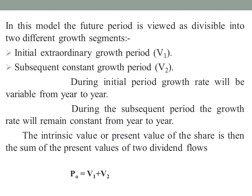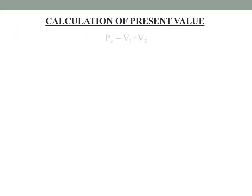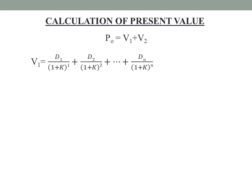Now we will talk about the intrinsic value calculation where P0 equals V1 plus V2. V1 is calculated using the formula: D1 divided by (1 plus k) raised to 1, plus D2 divided by (1 plus k) raised to 2, continuing till Dn divided by (1 plus k) raised to n. D1 is the first year dividend discounted by (1 plus k) raised to 1, and D2 is the second year dividend discounted by (1 plus k) raised to 2. This V1 formula is used when dividend rates vary during the extraordinary growth period.